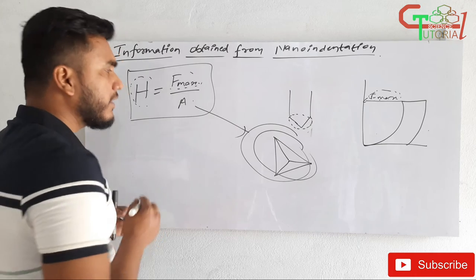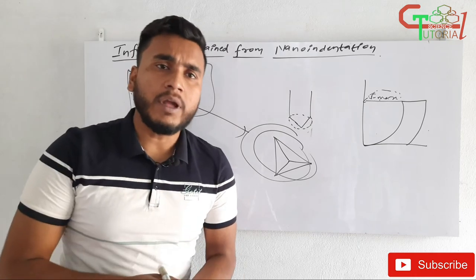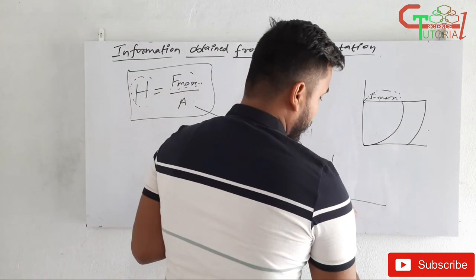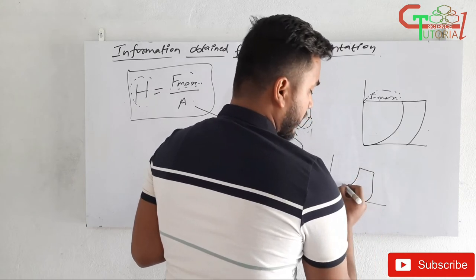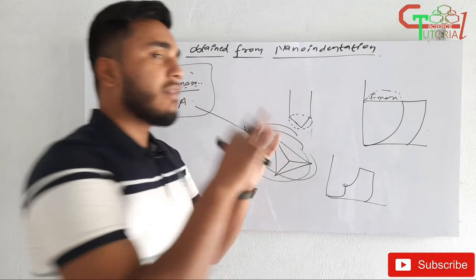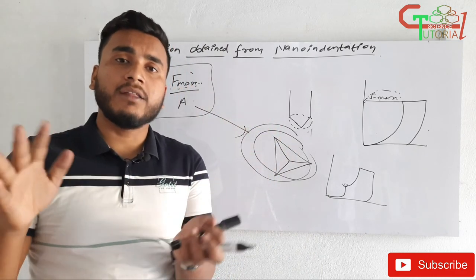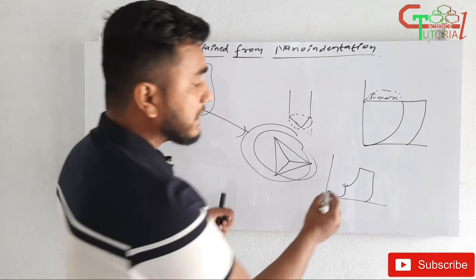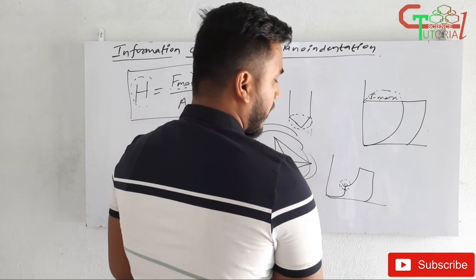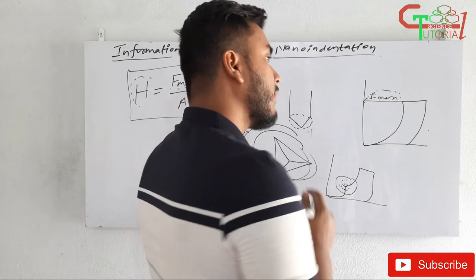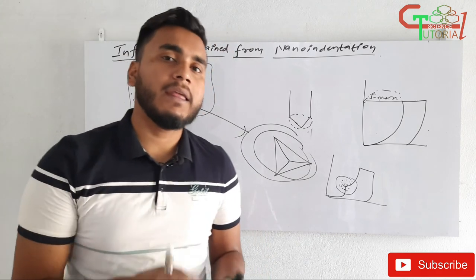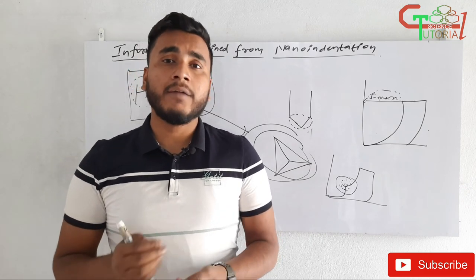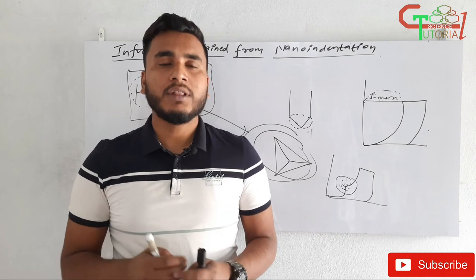Similarly, the other information that can be obtained is the elastic modulus. And another piece of information is the pop-in event. If inside the sample a specific point is very hard and the surrounding material is softer, this type of curve is obtained. If we get this type of curve, we know there is a pop-in event at that point. This is all about nano indentation technique. I hope you like the video — please share it with everyone you know. Thank you for watching.